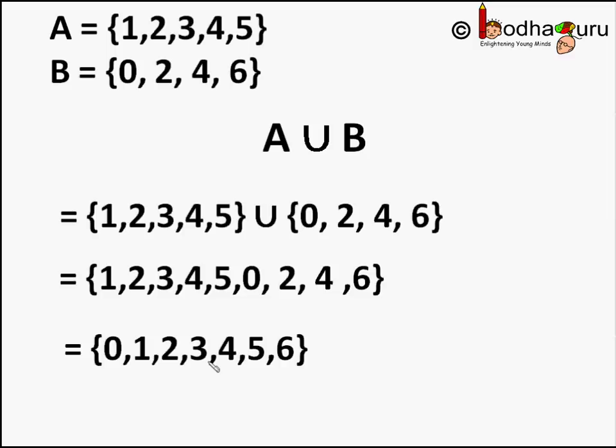So union of two sets A and B is represented as A union B. Union is a symbol similar to U. So union of two sets A and B is a set that contains all the elements of A as well as all the elements of set B. Just ensure all the elements are unique. You don't write the same element twice.